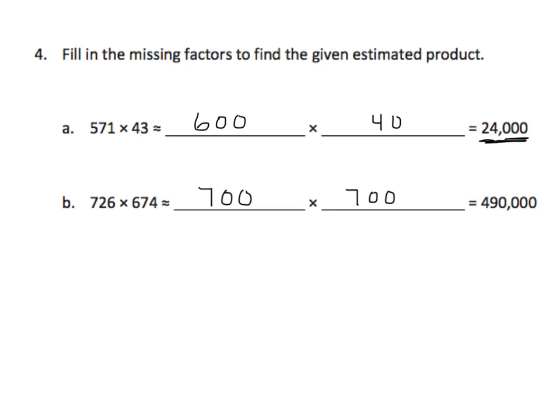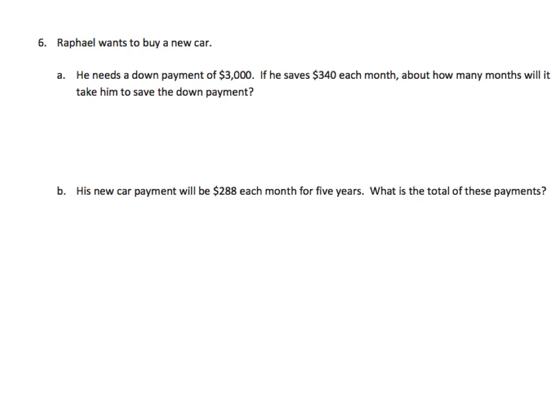We are going to jump over now to an actual homework problem. Again, I am going to just give you a little guidance. But I am not doing it out for you. I just want to point out a pitfall. All right. If we look at this, Raphael wants to buy a new car. He needs a down payment of $3,000 if he saves $340 each month. About how many months will it take him to save for the down payment? And the critical word here is about. Okay, so that tells us that we want to estimate it. And we can use the same procedure we have by rounding and then estimating. You'll notice that $3,000 is already easy to work with. So the only thing that we're going to have to round is $340.